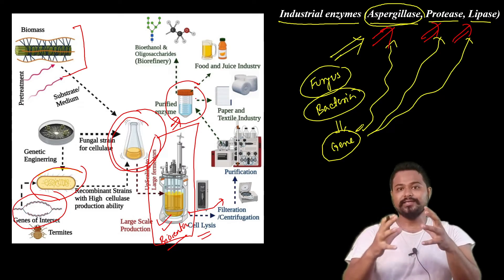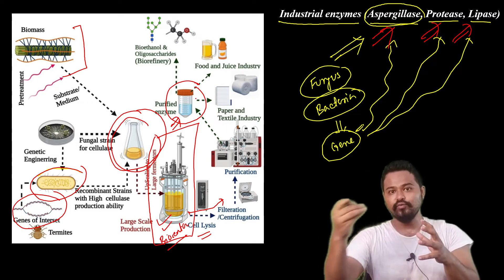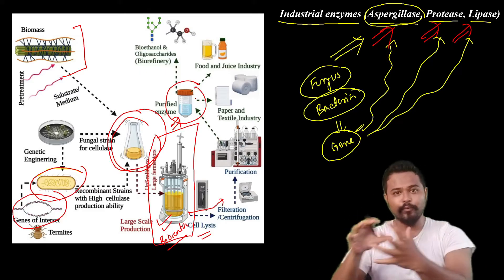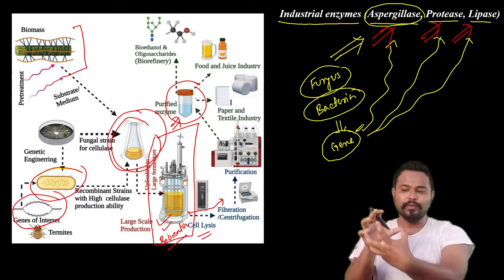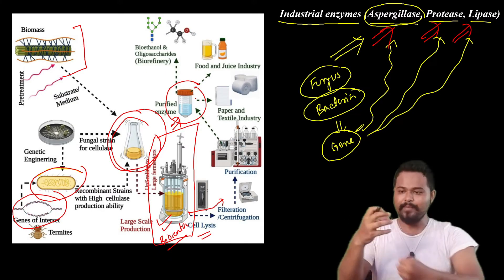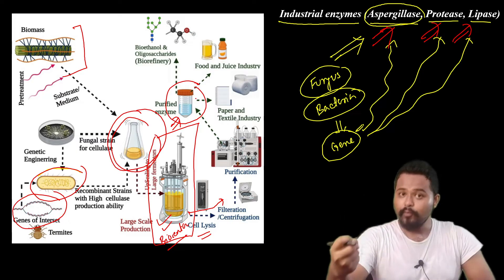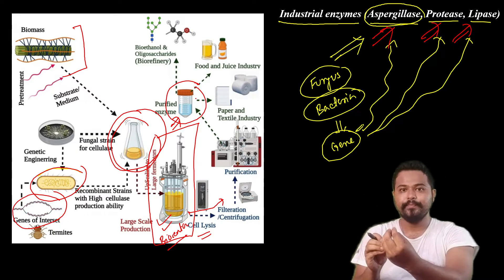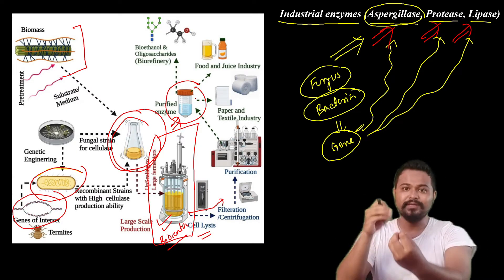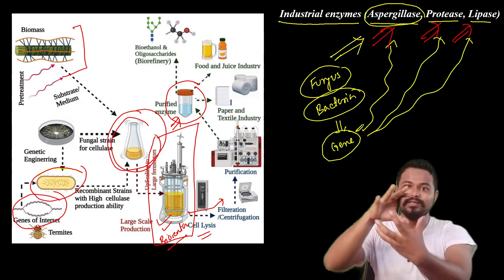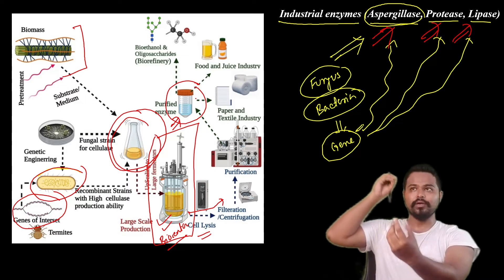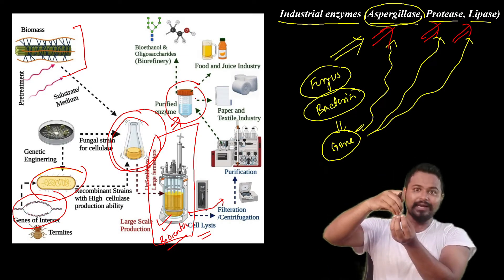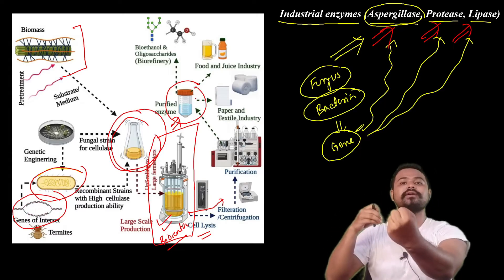The bacterial cells are lysed. This can be used to filter the cells. Using enzymes, proteins, and DNA, the cellular contents are separated. Finally, you have enzymes and you filter them.